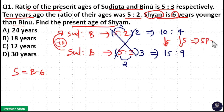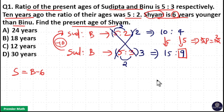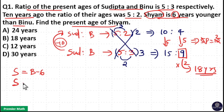5 parts equal to 10 years means 1 part equals 2 years. We need Binu's present age first. Binu's present age is equal to 9 parts, and 9 parts means 9 into 2 equals 18 years. So Binu's present age is 18 years. Therefore, Shyam's present age equals 18 minus 6, which is 12 years. So option C is your answer.